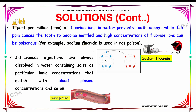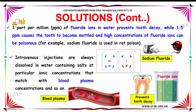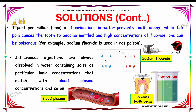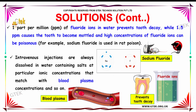One part per million (ppm) of fluoride ions in water prevents tooth decay, while 1.5 ppm causes the teeth to become mottled. High concentrations of fluoride ions can be poisonous — for example, sodium fluoride is used in rat poison.